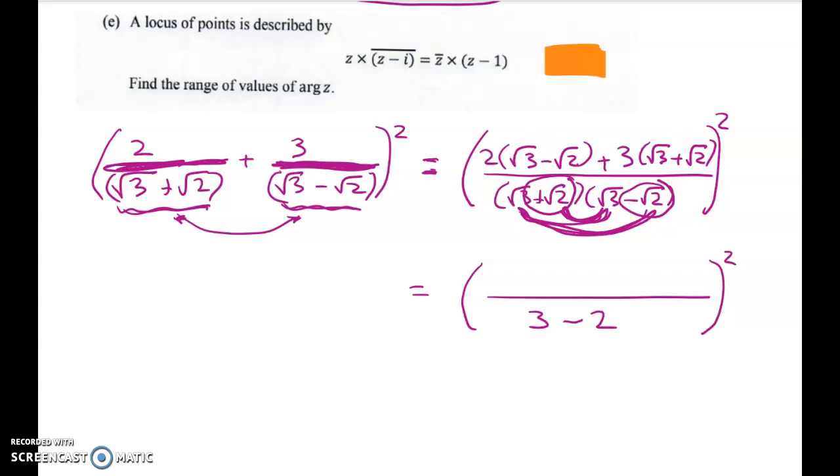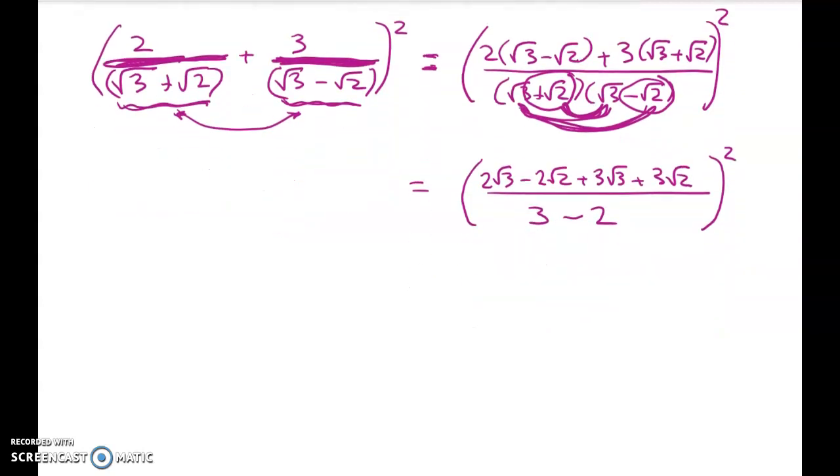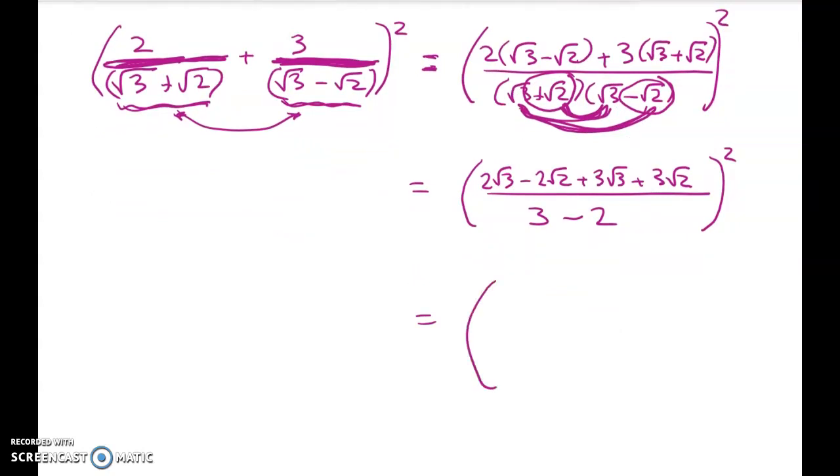Now in the numerator, if we just go really slowly, we get 2 root 3 minus 2 root 2 plus 3 root 3 plus 3 root 2. SURDs operate just like like terms in year 9. So we can see what combining we can do in here. Well the first thing is that because this is 1 and 1 squared is just 1, I'm now not working with a fraction. I've got 2 root 3 plus 3 root 3 gives me 5 root 3 and I've got minus 2 root 2 plus 3 root 2, so plus root 2 and I'm going to square that.